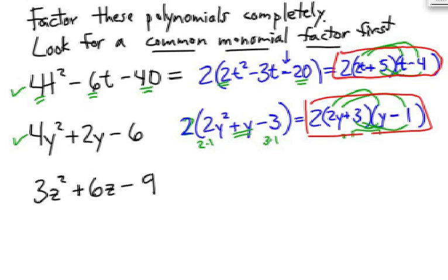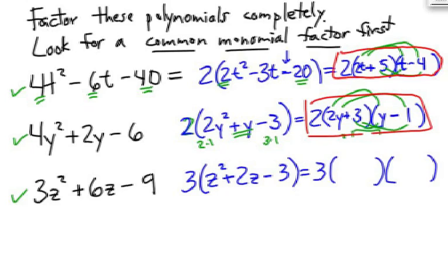And on the third problem, I notice a 3 could be a common factor on the outside. So, 3 times z squared plus 2z minus 3. Can you factor that? Yes. This will be a little bit easier than the other two. I know that I'm going to have to have a z in both places. And I'm going to have to have a 3 and a 1. 1 is positive and 1 is negative. Which one is it?